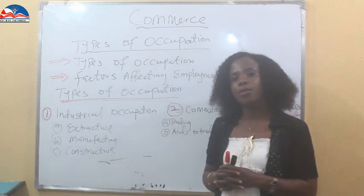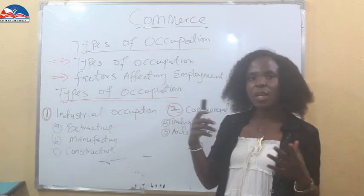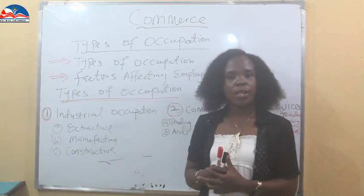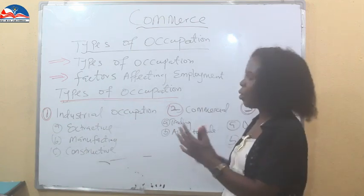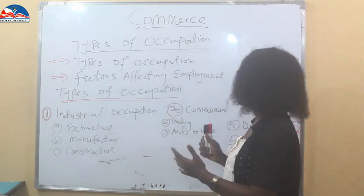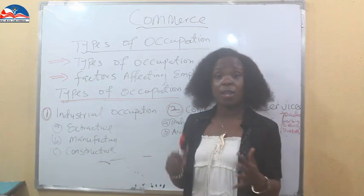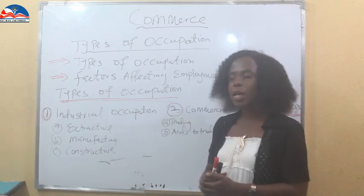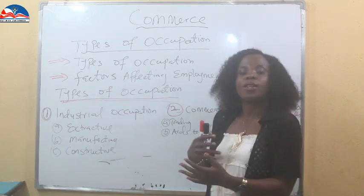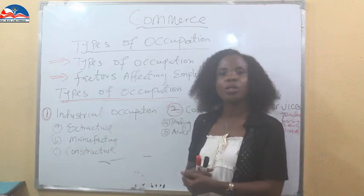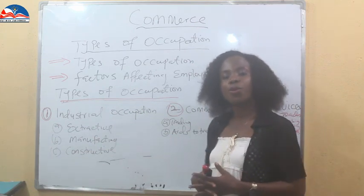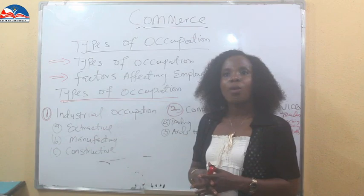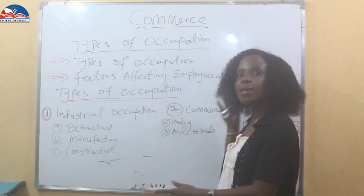Remember that in the diagram we have on that chart, we have three columns while explaining occupation. We have the industrial areas, we have the commercial areas, and we have the service areas of occupation. Our types of occupation fall within these three ranges — either working under the industrial, commercial, or service aspect of occupation.